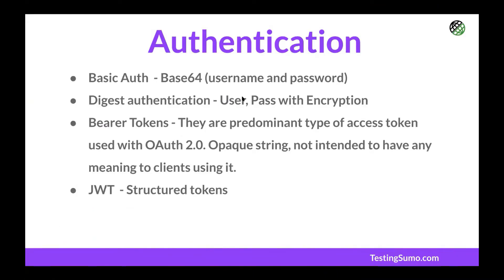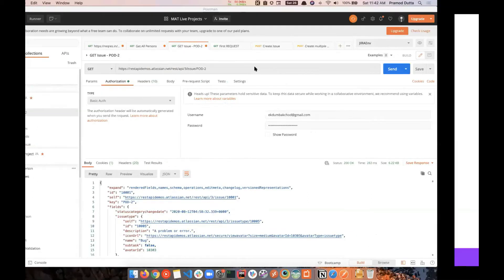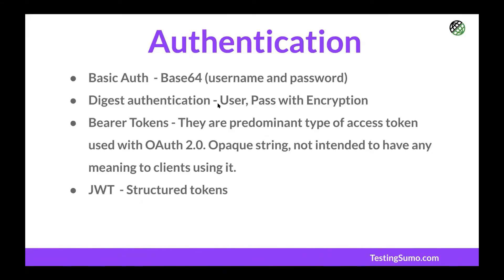Authentication is basically a way to check if the user is correct. For example, the username and password associated with a project lets you access its information. However, base64 is not secure — anyone can intercept your network traffic, decode the base64, and retrieve your username and password. That's why we have digest authentication.